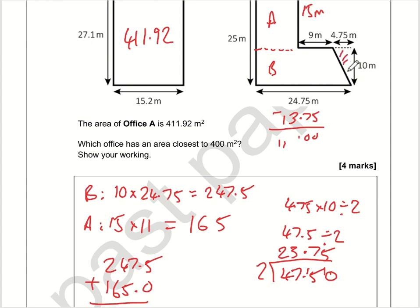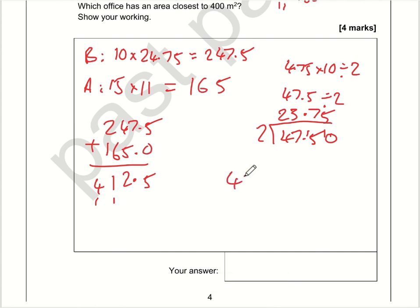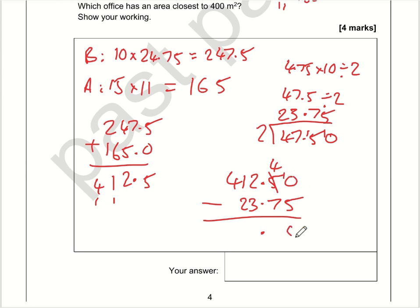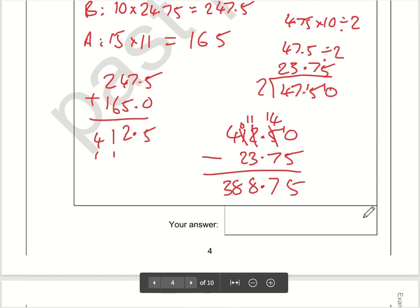We want to subtract the triangle area of 23.75 from our total of 412.50. Working through the subtraction: 0 minus 5 can't be done, so borrow — 10 minus 5 is 5. 4 minus 7 can't be done, borrow — 14 minus 7 is 7. 1 minus 3 can't be done, borrow — 11 minus 3 is 8. 14 minus 2 is... and we get 388.75. So the area of office B is 388.75 square metres.